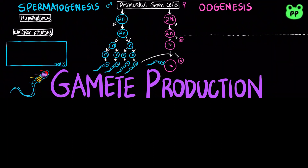Gametogenesis refers to the production of gametes by meiosis. Spermatogenesis is the production of mature sperm. First, primordial germ cells in the embryo give rise to spermatogonial stem cells, which in turn give rise to spermatogonium through mitosis. Spermatogonium then generates primary spermatocyte through mitosis.